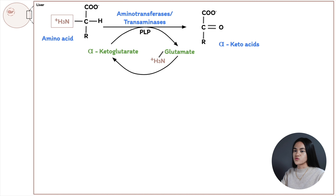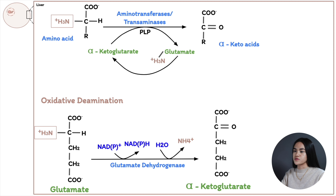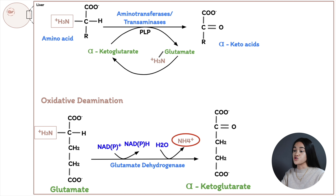Glutamate needs to release the ammonia, so it enters the mitochondria and its amino group is removed via oxidative deamination, catalyzed by the enzyme glutamate dehydrogenase. This ammonia will be diverted to the urea cycle, and glutamate becomes alpha-ketoglutarate, which can enter the citric acid cycle.